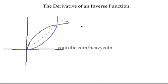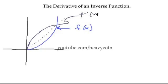This line here is f of x and this line here is f inverse of x, the inverse. When we're talking about taking the derivative, first off on some interval it must be continuous. A function has to be continuous and differentiable at every point, and also f must have an inverse.